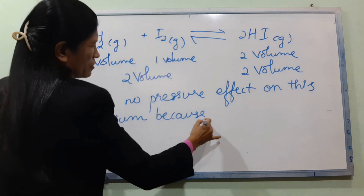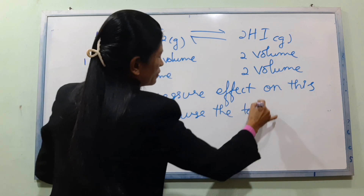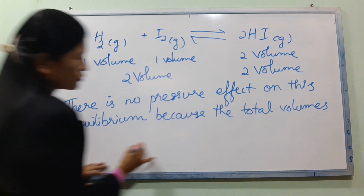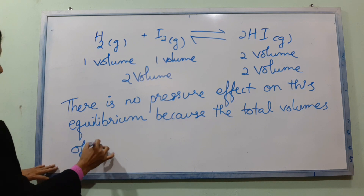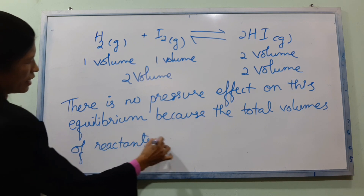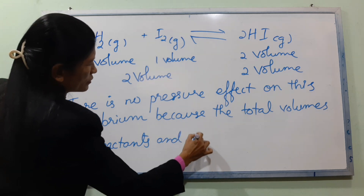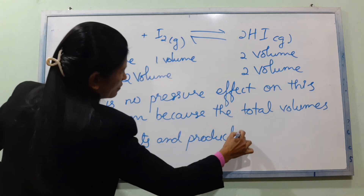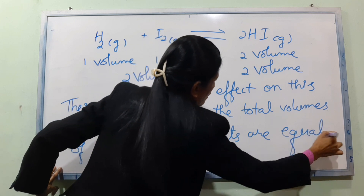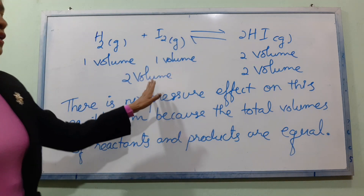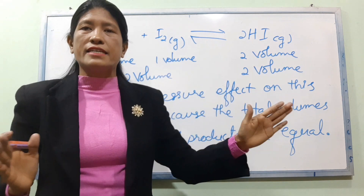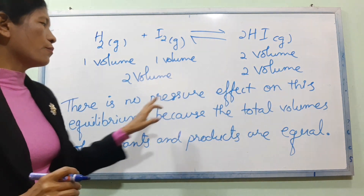Because the total volumes of reactants and products are equal, the total volumes of reactants and total volumes of products are the same. The equilibrium is not shifted by pressure.